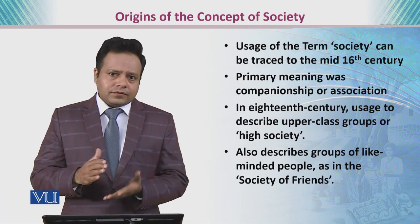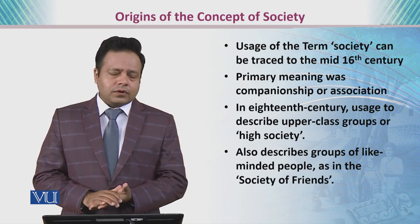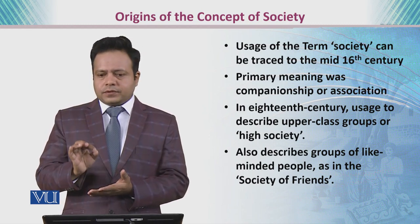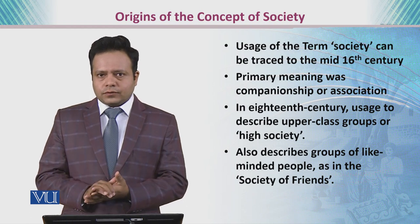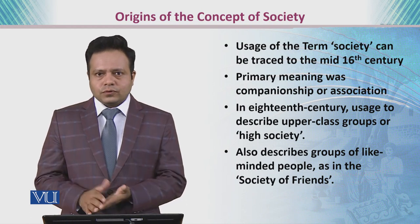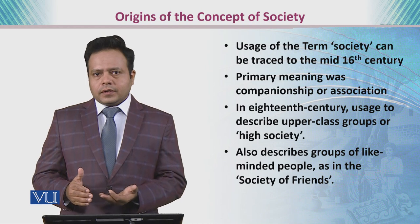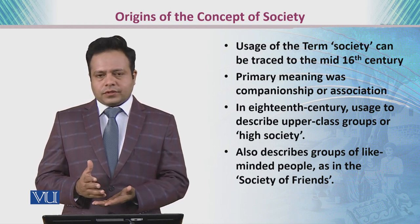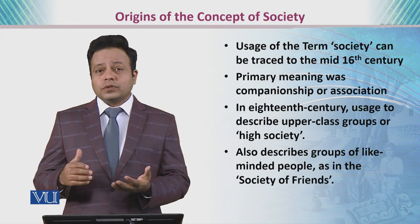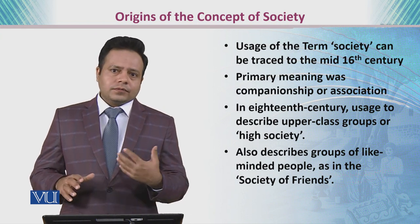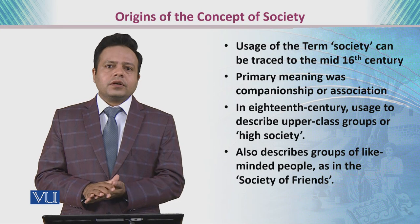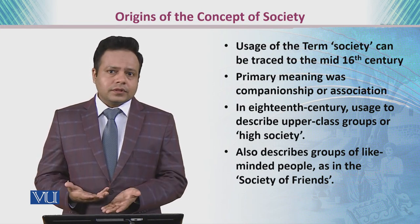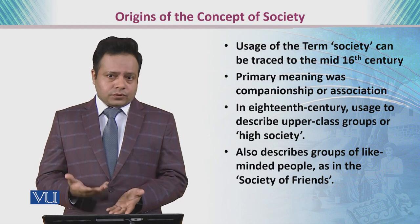But by the passage of time, the meanings became much more complicated and complex, especially when different disciplines began using the term. For example, during the late 18th century, when the term 'social physics' was coined, the term society was not being used in that complex sense which is used in modern sociological literature.